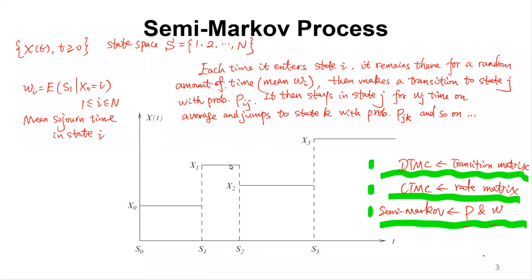Every time you enter a state, for example x1, it will remain in x1 for a random amount of time with mean sojourn time wi, so here it is w1. When the time comes, you make a transition. The transition could be to state j or state k: the probability to state j is pij, to state k is pik. If you get into j, it will stay in j for wj time on average, then jump to state k with probability pjk and so on.